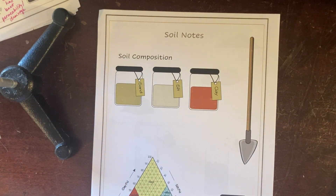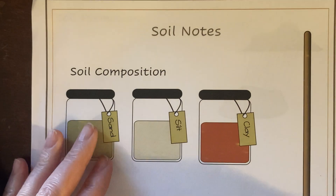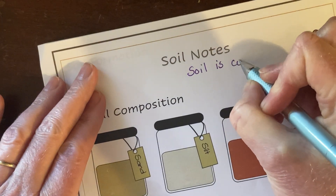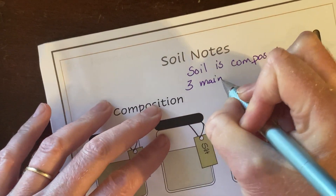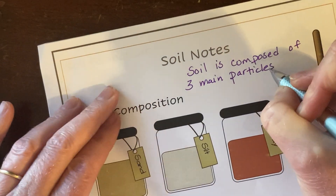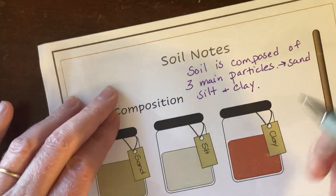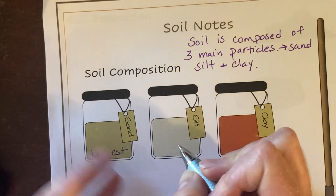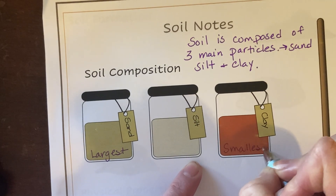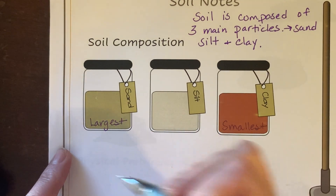Let's do soil notes together from your soil diagram notes. So the first part talks about the different components of soil. Soil is composed of three main particles and they are sand, silt, and clay. Sand is the largest particle, silt is in between, and clay is the smallest particle in terms of size. The percentage of each of these determines the soil type.